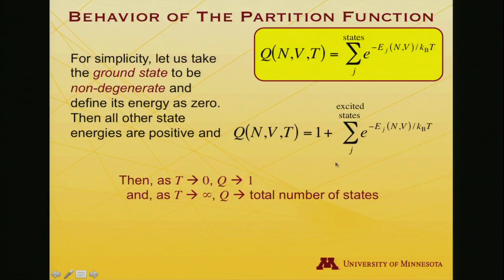Now, what about if T goes to infinity? Well, in that case, I will be dividing something by infinity. So it'll be zero. I'll get e to the minus zero. That's one. So for every single state, I'll add a one. So one, one, one, one, one, one, one. I just count all the states. So as the temperature becomes infinite, Q goes to the total number of accessible states.